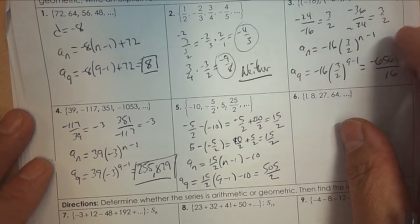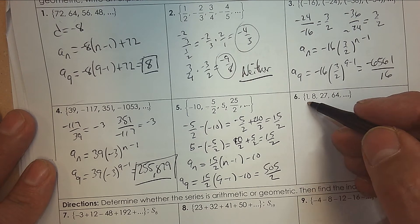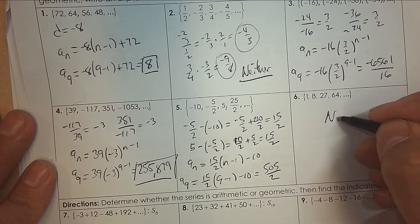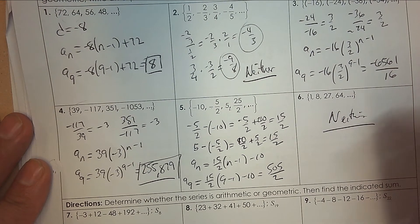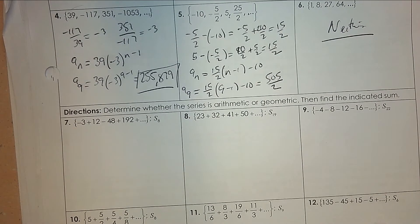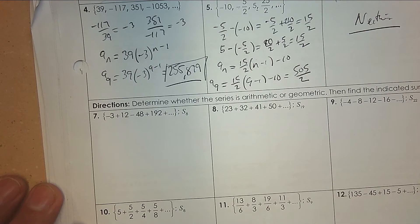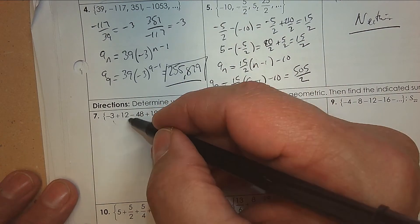Number six: add seven — that's not going to work. Times eight, times eight — that's not going to work either. So you're not adding or multiplying consistently, it's neither. Number seven: I'm multiplying by negative four each time, so it's geometric.